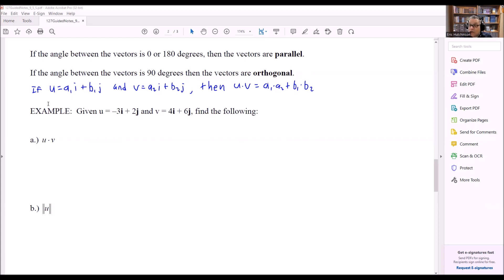Also a reminder here of our dot product. We have u and we have v here. Then this says u times v equals a1 times a2 plus b1 times b2. This is a formula that we're going to use for the dot product in this section.